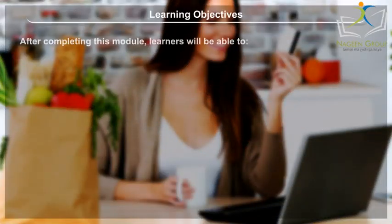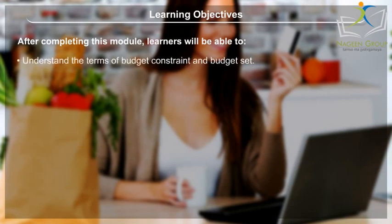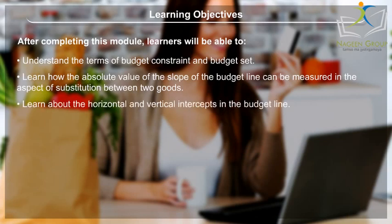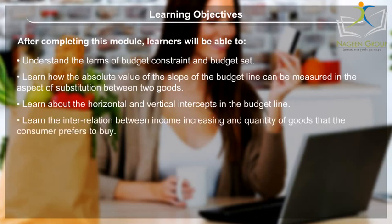Learning Objectives. After completing this module, learners will be able to understand the terms of budget constraint and budget set. Learn how the absolute value of the slope of the budget line can be measured in the aspect of substitution between two goods. Learn about the horizontal and vertical intercepts in the budget line. Learn the interrelation between income increasing and quantity of the goods that the consumer prefers to buy.